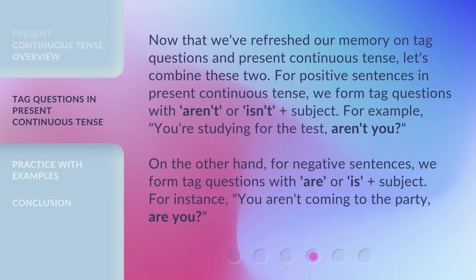Now that we've refreshed our memory on tag questions and present continuous tense, let's combine these two. For positive sentences in present continuous tense, we form tag questions with 'aren't' or 'isn't' plus subject. For example, 'You're studying for the test, aren't you?' On the other hand, for negative sentences, we form tag questions with 'are' or 'is' plus subject. For instance, 'You aren't coming to the party, are you?'